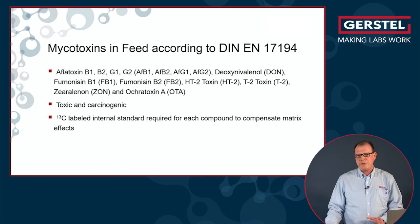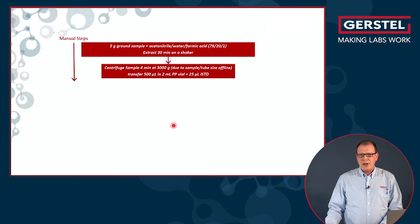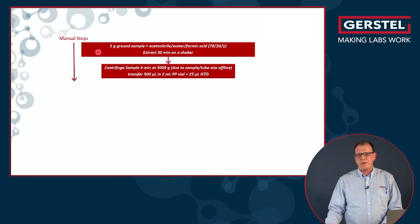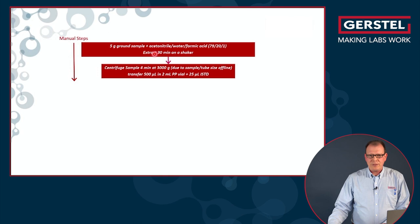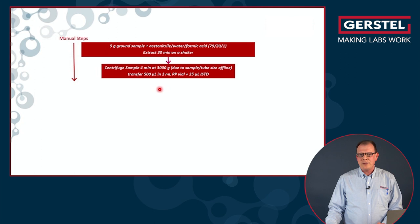In this workflow it was intended not to automate the first extraction step, because very large volumes should be extracted. So we do this manually — we take 5g of sample with an extraction solvent. Then after the extraction we need to centrifuge and fill an aliquot of 500 µL of this extract to a sample vial. After that the automation starts.